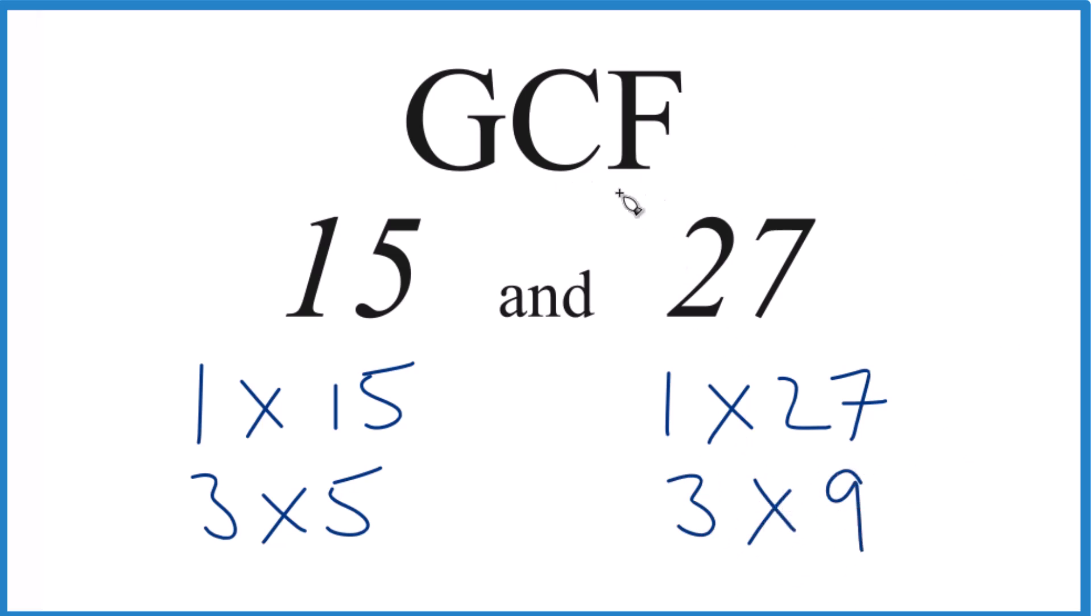So let's find the common factors for 27 and 15 here. So 1, that's a common factor. Then 3, and 3 looks like it's the greatest factor in common between 15 and 27. So the GCF for 15 and 27, that's 3.